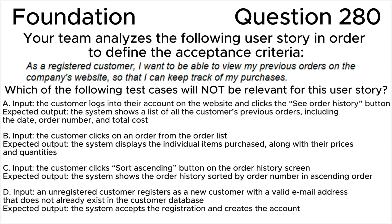Answer A — Input: the customer logs into their account on the website and clicks the 'View Order History' button. Expected output: the system shows a list of all the customer's previous orders, including the date, order number, and total cost. Answer B — Input: the customer clicks on an order from the order list.